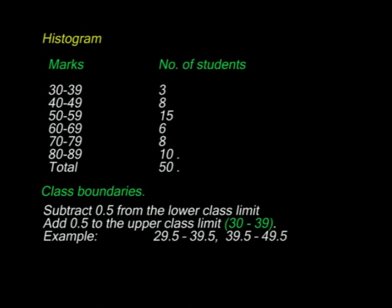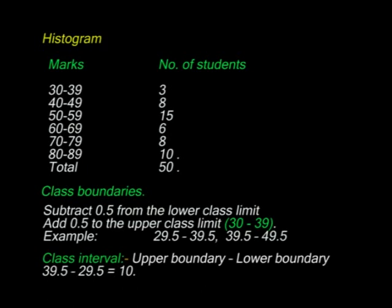For example, in the class 30 to 39, the lower class boundary is 29.5 and the upper class boundary is 39.5. For the class 40 to 49, the lower class boundary is 39.5 and the upper boundary is 49.5. The difference between the upper and the lower boundary is called the class interval, class width, or class size. The class interval equals the upper class boundary minus the lower class boundary. For the class 30 to 39, the class interval is 39.5 minus 29.5, which is 10.